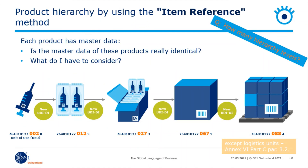With the item reference method, a new UDI-DI is assigned for each hierarchy level. The base unit or unit of use has its own identification. The two-pack also receives a new GTIN, and the box containing maybe five of those two-packs also has a new GTIN. The next level — a box with, for example, 10 boxes — also receives a GTIN. You can also assign the pallet its own GTIN; however, the pallet has to be a delivery unit. Basically, every unit that is for sale has its own GTIN.